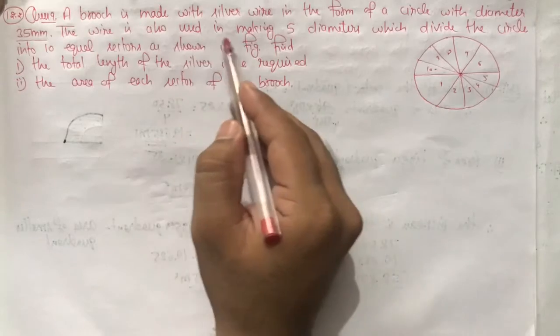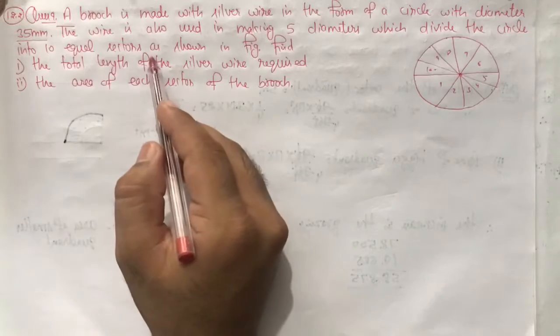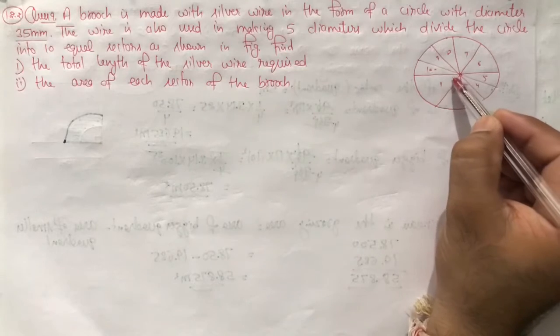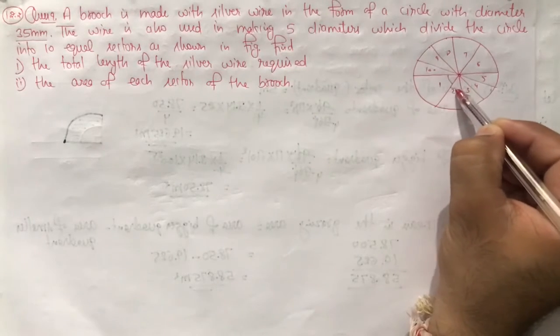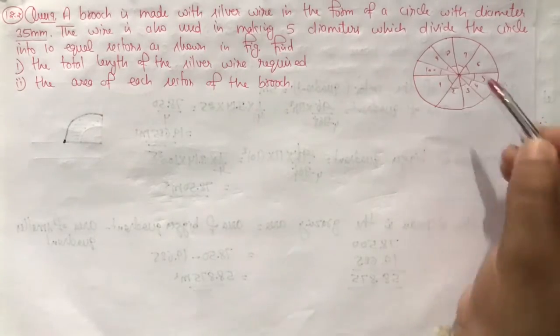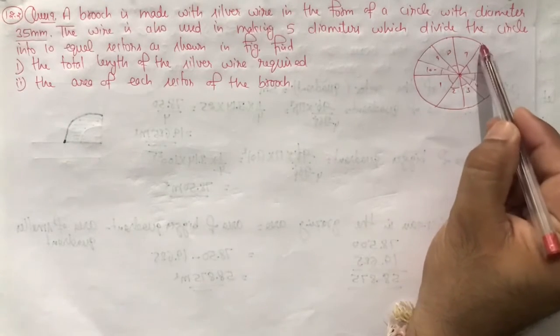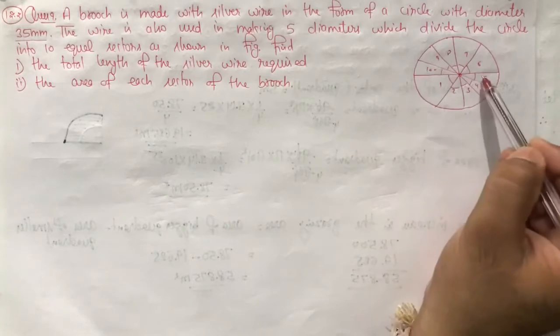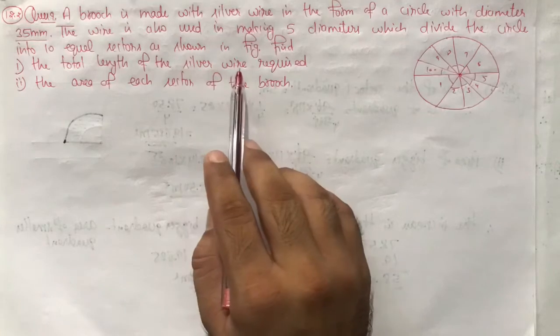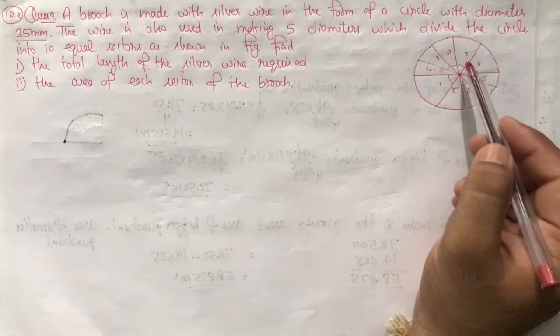The wire is also used in making 5 diameters which divide the circle into 10 equal sectors as shown in this figure. These are equal parts. What will be made with silver wire? This circle is made with silver wire, and these 5 diameters are made with silver wire. The total length of the silver wire required - how much length is required to make it?